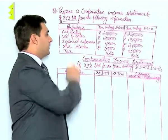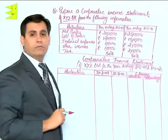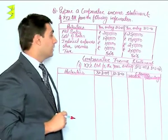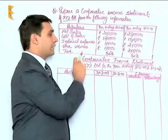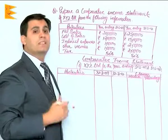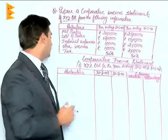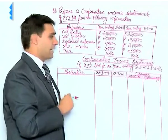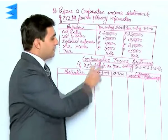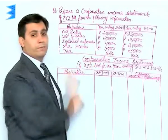We are given net sales, cost of sales, and indirect expenses. Then we are given information about other income, which means miscellaneous incomes. And lastly, we are given tax. Remember, the tax here is given in the form of a percentage.